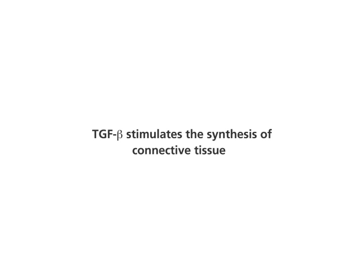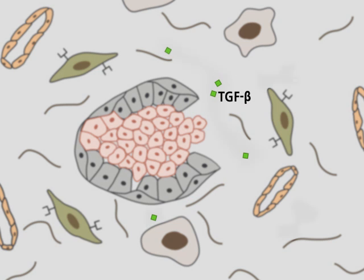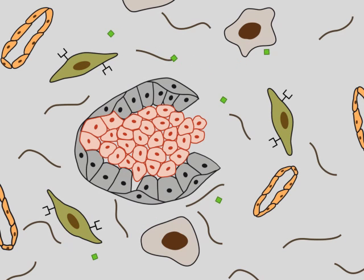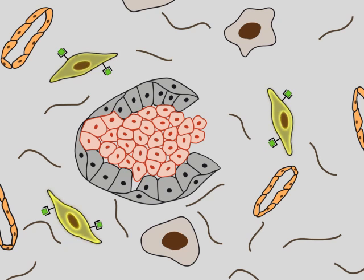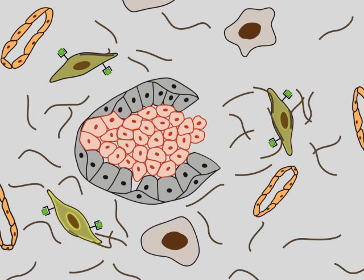TGF-beta stimulates the synthesis of connective tissue. Tumor cells may release TGF-beta, which activates tumor-associated fibroblasts. The activated fibroblasts produce connective tissue components such as collagen 1 and 3. Tumor stroma is the connective tissue produced in response to the growth of solid tumors.